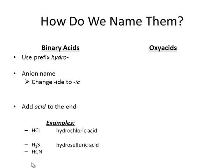HCN — again, this is the one example where we get a polyatomic ion. Cyanide: the -ide becomes -ic, so we get hydrocyanic acid.